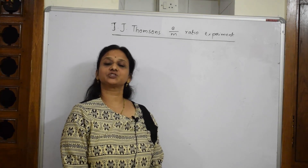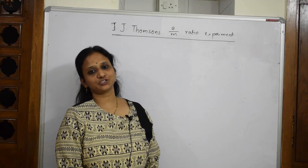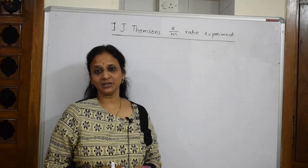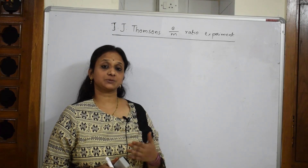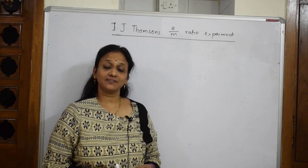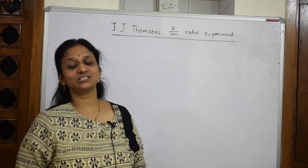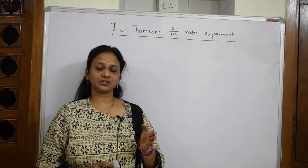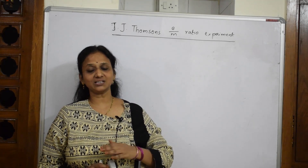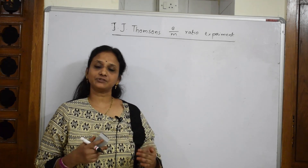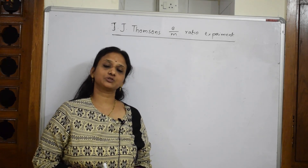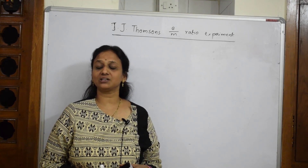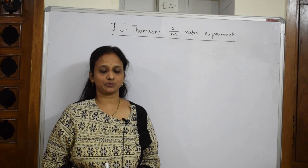Welcome back to one more session of Structure of Atom. We have already started the chapter with the basic index given, then gradually I taught you what sub-topics are to be studied. I started with the first concept — cathode rays. We decided to study cathode rays and anode rays, discovery of neutrons. After that, we'll go into Rutherford's model, Thomson's model, Heisenberg uncertainty principle, Schrödinger equation, and so on.